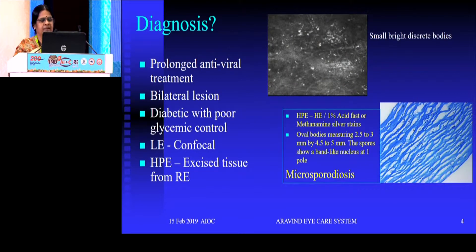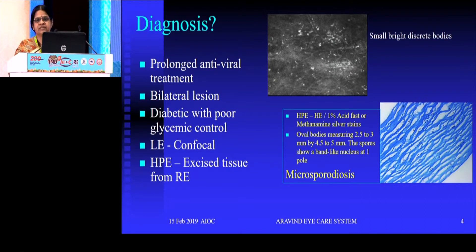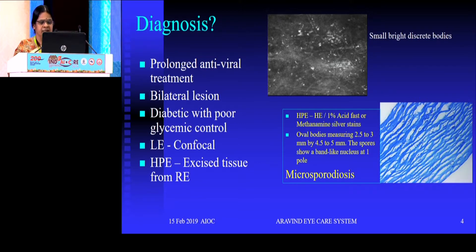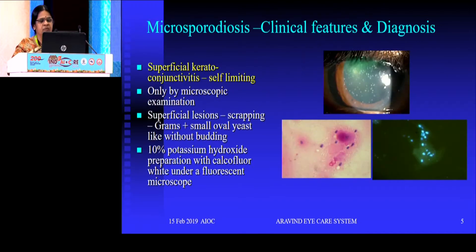The patient was on standard treatment. We went for confocal microscopy, and from the history and the appearance of the other eye, we suspected microsporidial infection — because many times a chronic non-responding viral keratitis, we have to keep this in mind. We found the typical bright bodies in confocal. But this eye was very bad, so we had to go for a therapeutic keratoplasty immediately. Pathology showed microsporidial organisms going up to almost the Descemet's level.